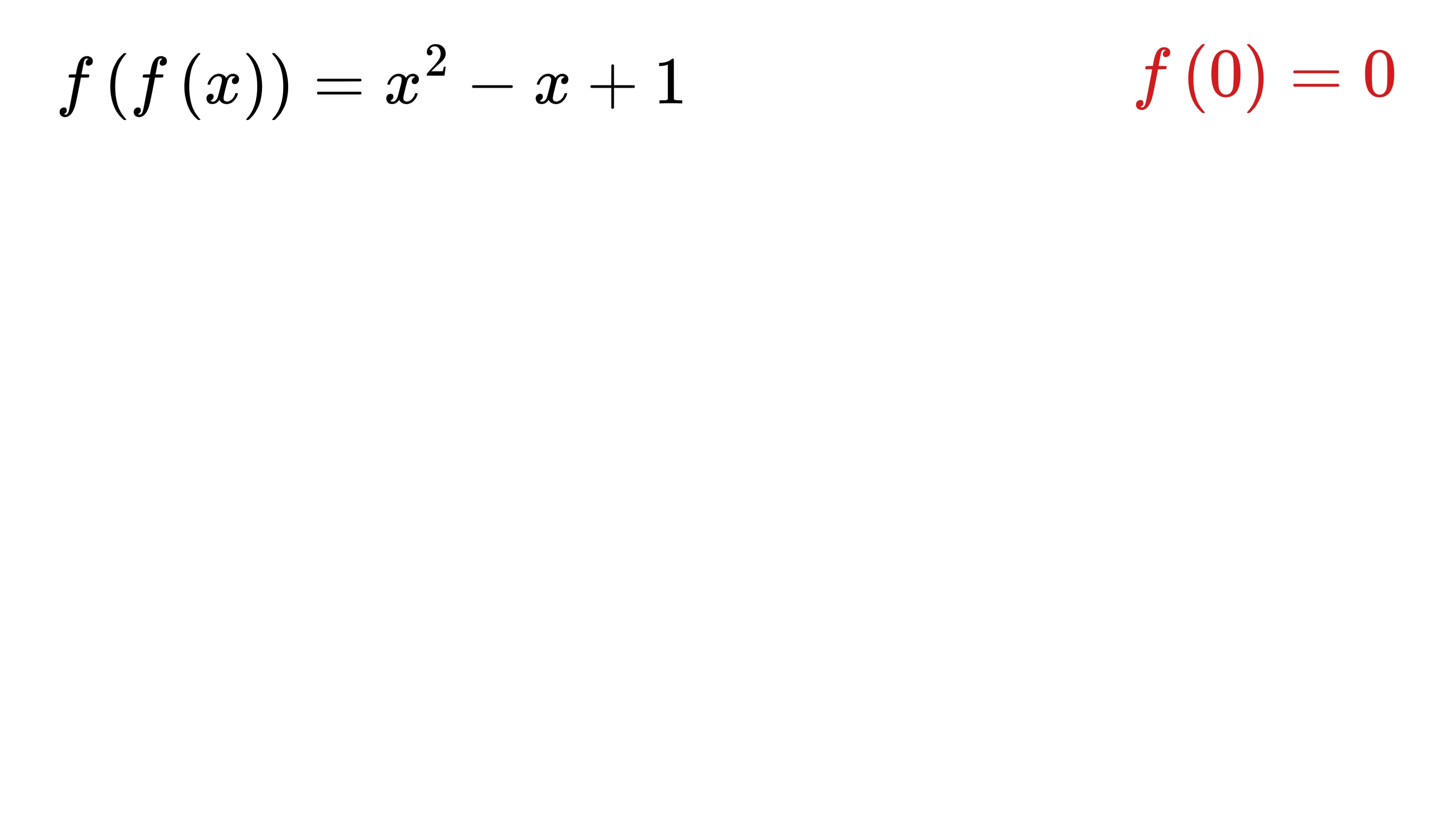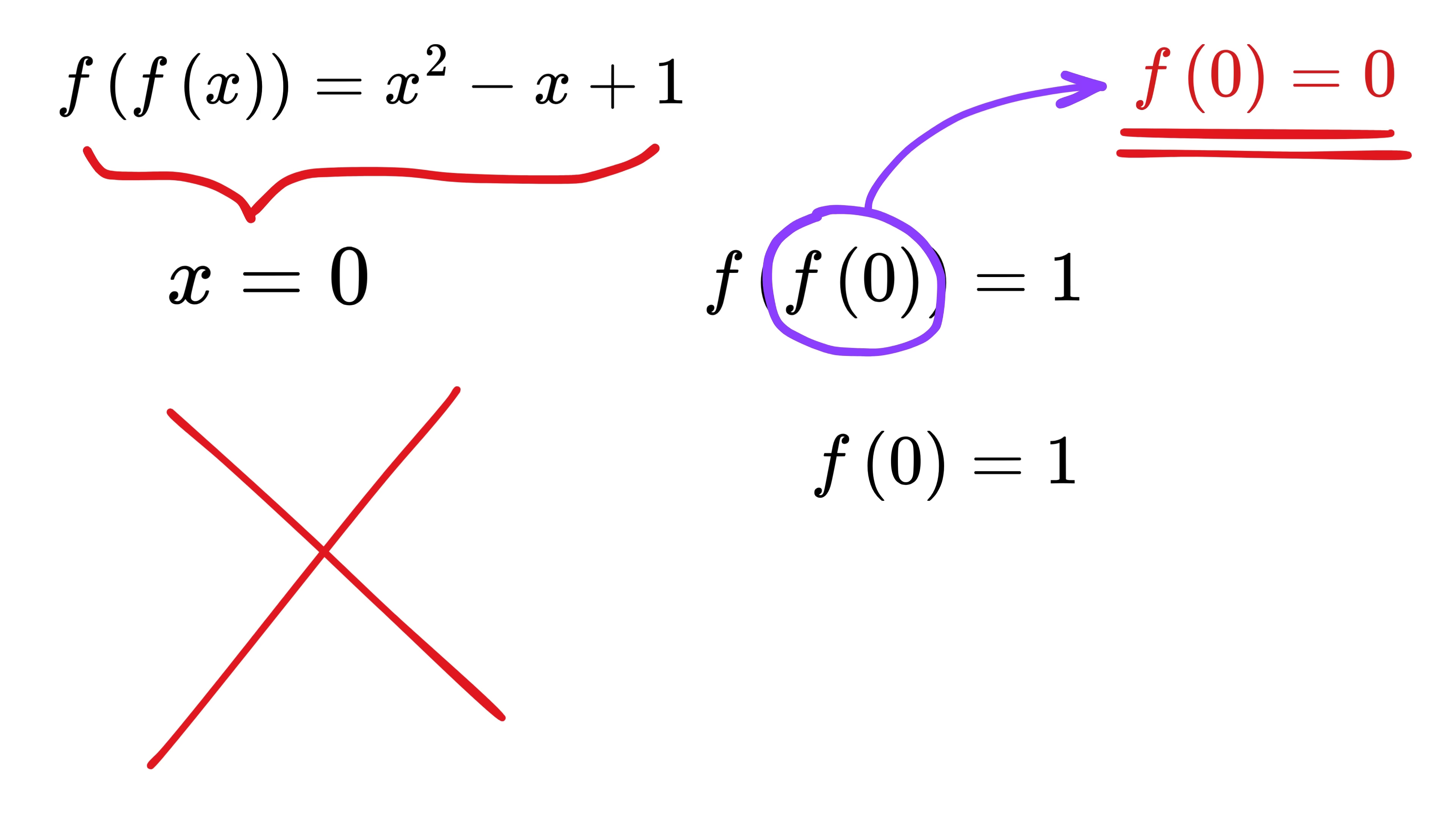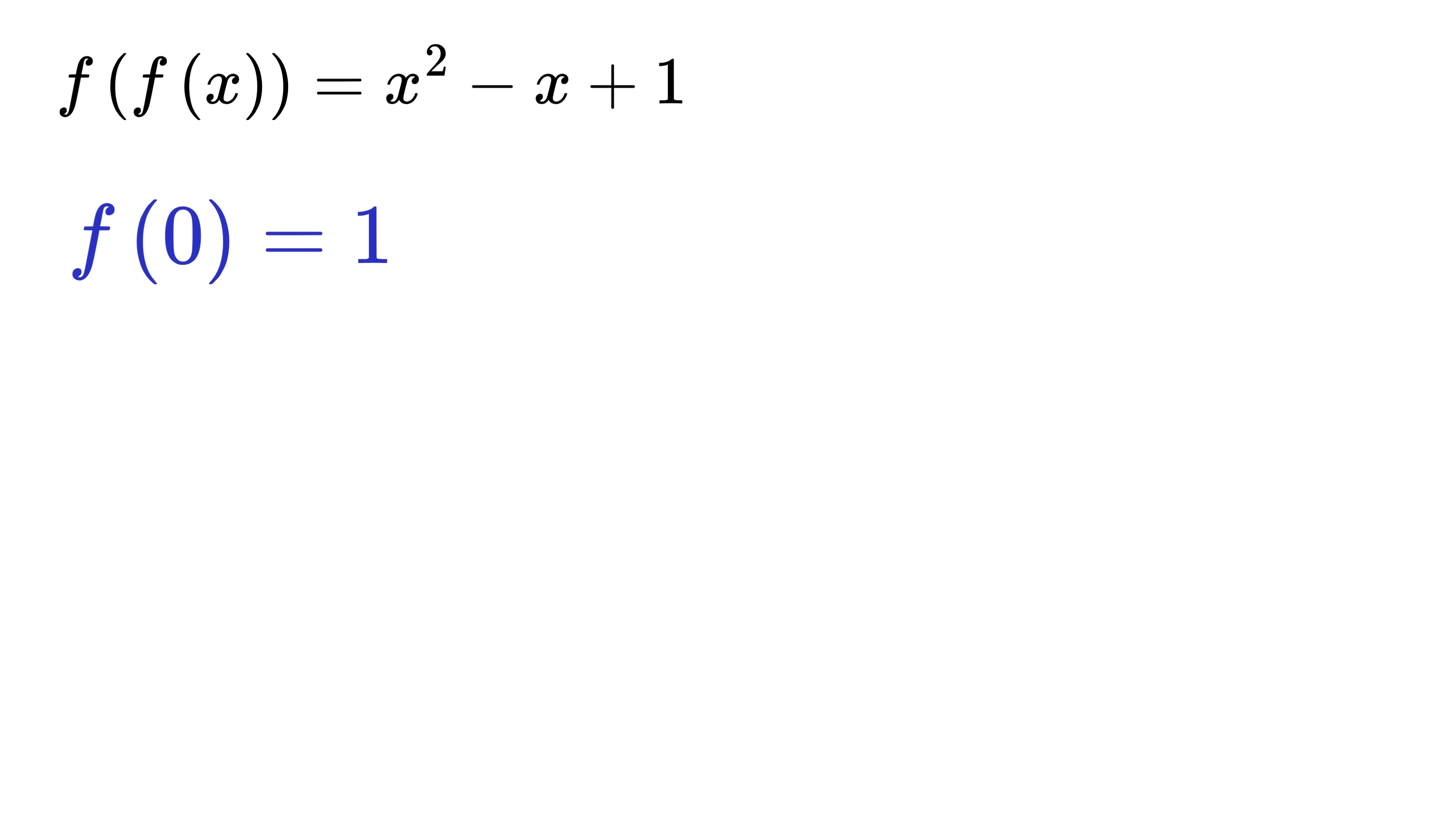Suppose we have f of 0 as 0. Put x equals 0 in this equation. We get f of f of 0 equals this, which is 1. But f of 0 is 0, and thus this becomes 0. So it gives f of 0 equals 1. Hey, that's a contradiction because we have defined f of 0 as 0. So this is not valid, and hence f of 0 equals 1.